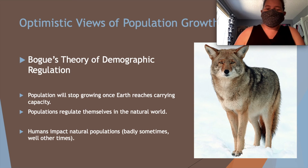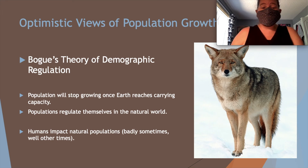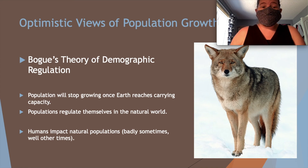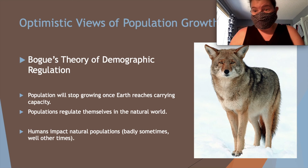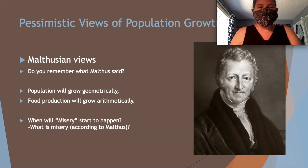Bogue's theory of demographic regulation states that the population will stop growing once Earth reaches its carrying capacity. In the natural world, populations regulate themselves. The idea is that we will simply stop growing when Earth is ready — there will be no more population growth beyond that point.